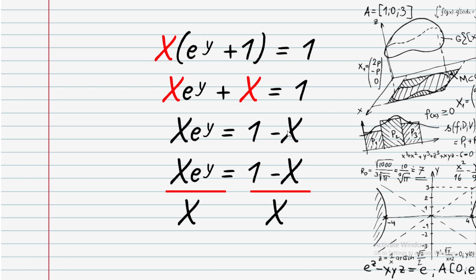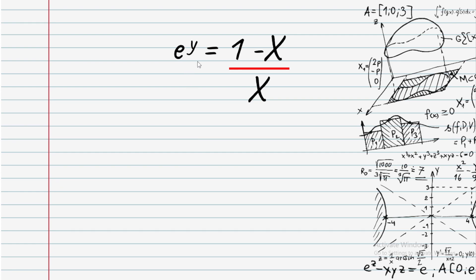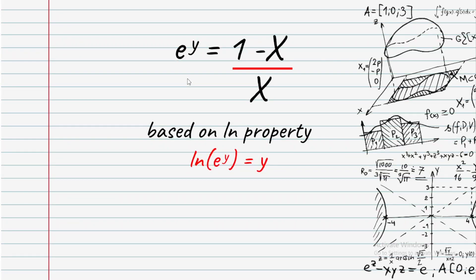We get e to the power of y equals 1 minus x over x. Now apply the natural log to both sides. So e to the power of y equals (1 minus x) over x, and finally y equals ln of (1 minus x) over x.